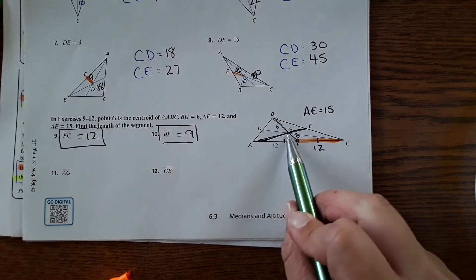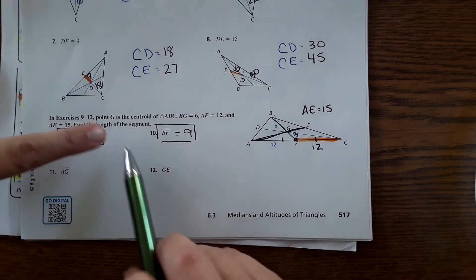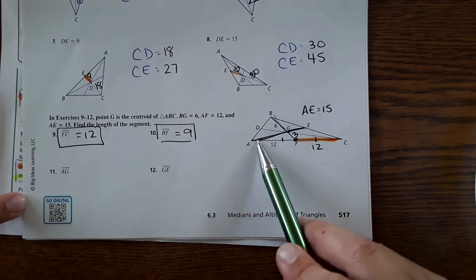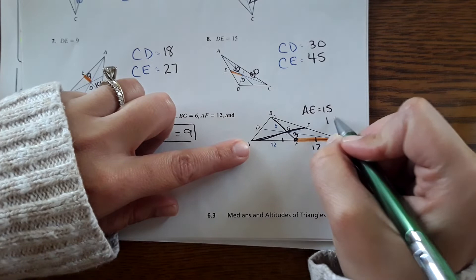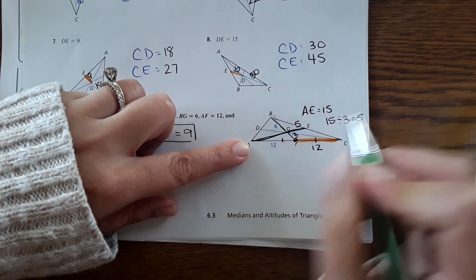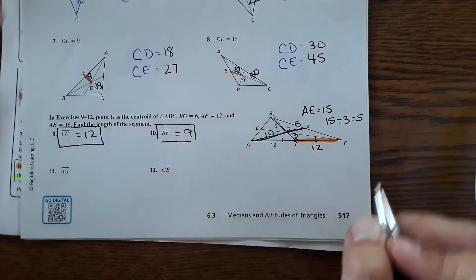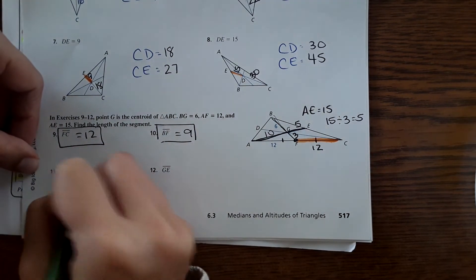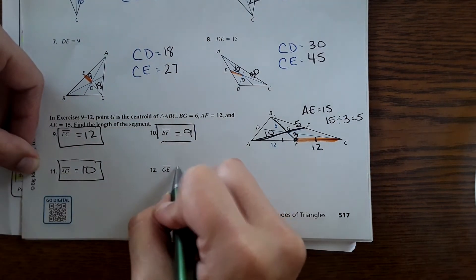Next, it wants the length of AG and GE. The instructions said that AE is 15—like the whole thing is 15—so I'm going to divide 15 by 3 to get the one-third. So this would be 5, and then this would be 10. So AG is 10 and GE is 5.